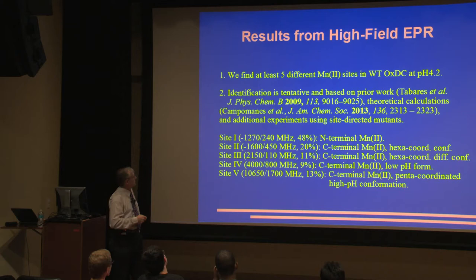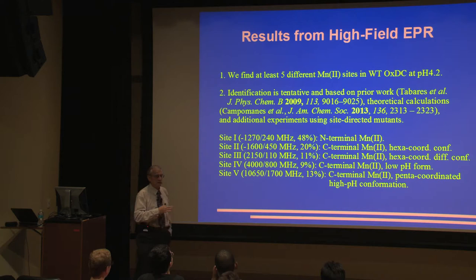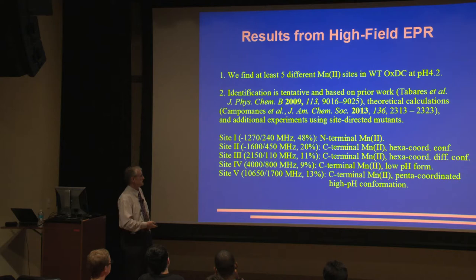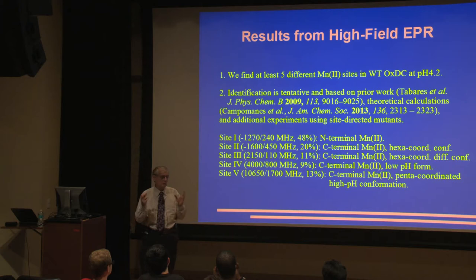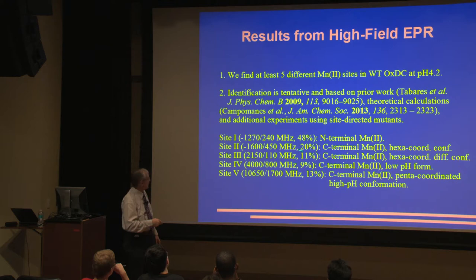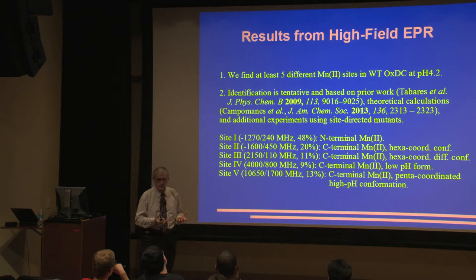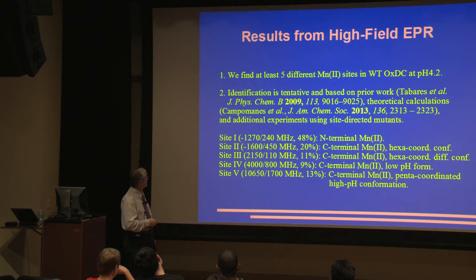The identification is tentative but based on prior work of another group that looked at these as a function of pH and followed these different sites as a function of pH. They identified the one with the negative D and small magnitude of D as the N-terminal site and the rest as the C-terminal site. We've done theoretical calculations recently in a paper that came out this year where we theoretically calculate the fine structure. We have the crystal structure, plug the coordinates in a computer program that does the quantum chemistry and calculates these fine structure parameters for us.